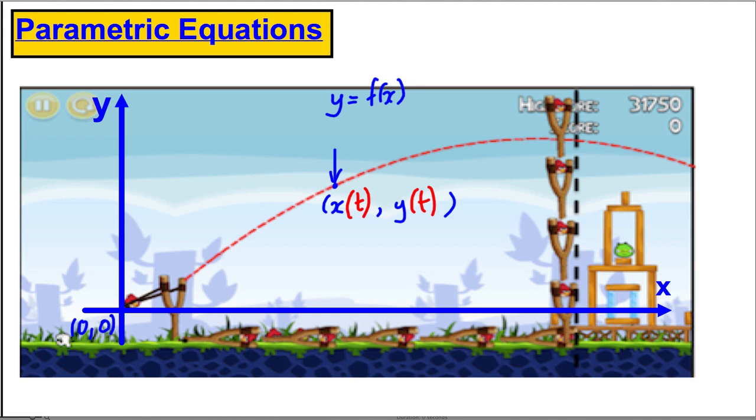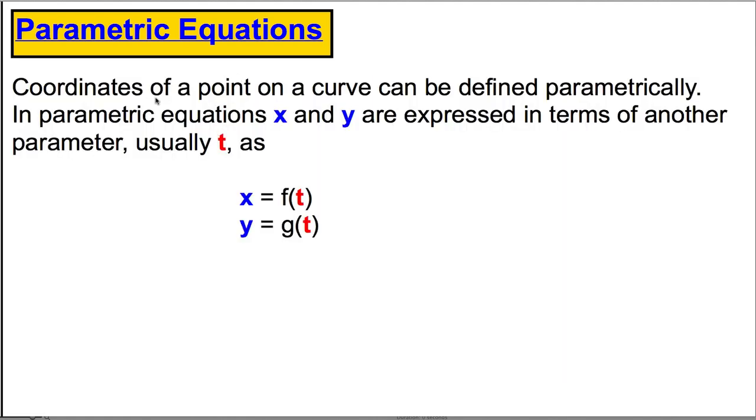So tightening this up, parametric equations: coordinates of a point on a curve can be defined parametrically. In parametric equations, x and y are expressed in terms of another parameter, usually t, as follows. So x is some function of this third parameter t, and y is some other function of this third parameter t.